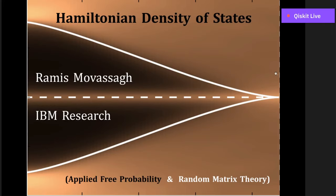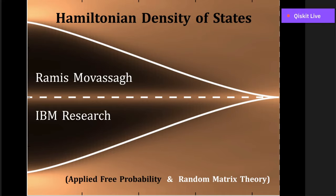Today I'll be telling you about Hamiltonian density of states. Hamiltonians are Hermitian operators — self-adjoint matrices — and by density of states, we mean the eigenvalue distribution. There are techniques I've been developing over more than 10 years for calculating the density of states of such Hamiltonians from the knowledge of their pieces. So if the Hamiltonian is a sum of two terms and you understand each term, this technique promises to give you the density of states of their sum.